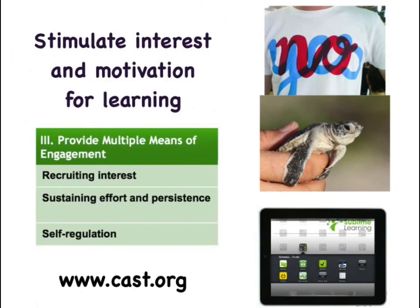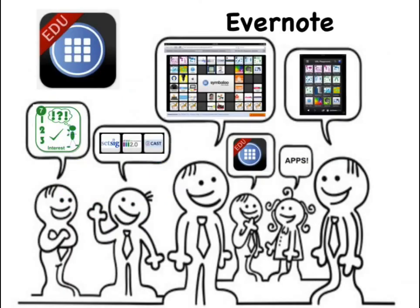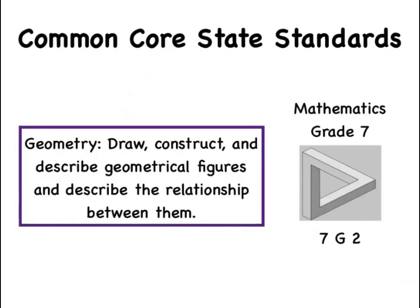This video will explore multiple means of engagement as we narrow our focus down to guideline seven, options for recruiting interest. To support this guideline, we will use the app Symbaloo. Symbaloo is a curation tool that builds individual choice and autonomy as students use online resources to help them understand geometric figures.